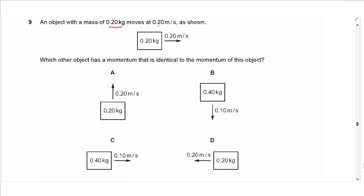Question 9 says: an object with a mass of 0.20 kilograms moves at a speed of 0.20 meters per second. Which other object has momentum identical to this object? Momentum equals mass times velocity, so the total momentum is 0.04 kg·m/s directed to the right. Anything not directed to the right can be cancelled out, leaving only C as correct.